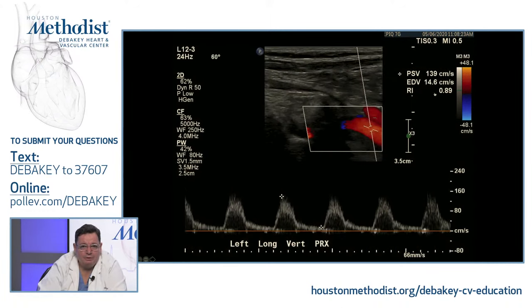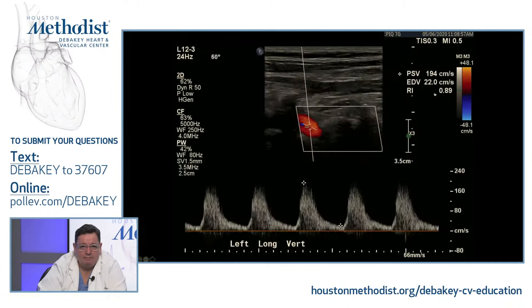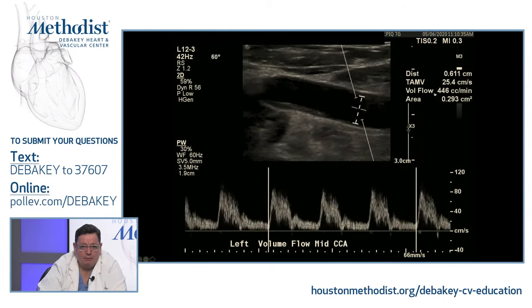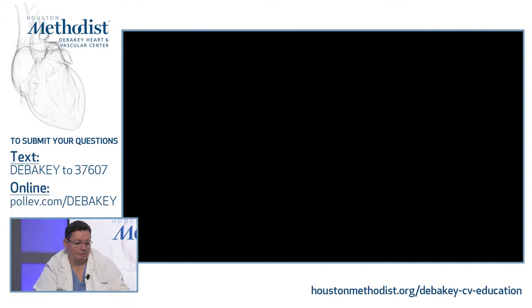That vertebral's increased velocity and the flow volume on the left side is 446 cc/min — definitely four times more flow coming up on this side compared to the right. So the left vertebral has a huge role feeding not just the retrograde vertebral on the right but most likely contributing to both anterior and posterior circulation.